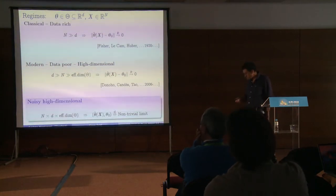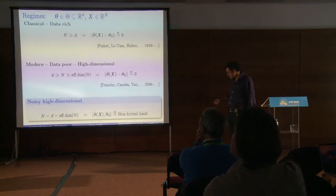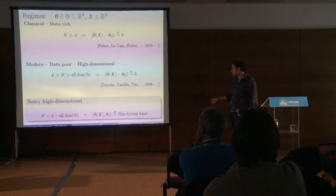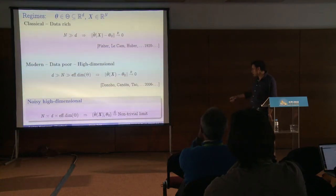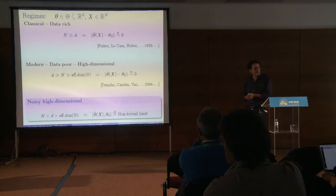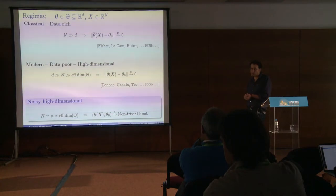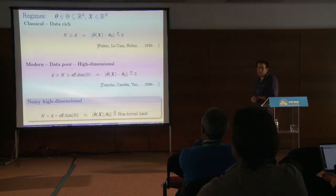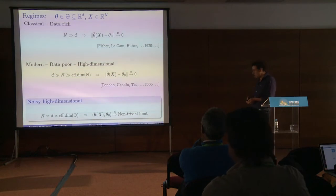In this talk, I focus on a third regime: the noisy high-dimensional regime. What I mean is that n and d go to infinity, often at proportional rate, and therefore you don't have consistency, but you have convergence of the pair (theta-hat, theta-zero) to some non-trivial limit. Even with infinitely many data, since model complexity grows, you still have error. I think of this as a noisy high-dimensional regime, in which we really don't neglect the importance of the noise.